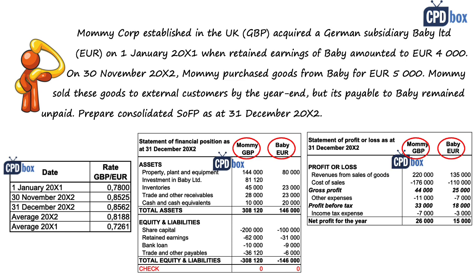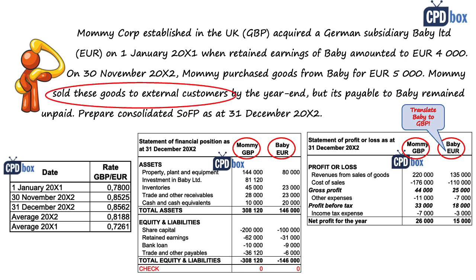You cannot add up balances in euros and British pounds — that would be nonsense. So the presentation currency here will be British pound, which is the functional currency of Mommy, and we will only translate Baby's statements to British pounds. The presentation currency can be anything the preparer chooses, but let's keep it simple.